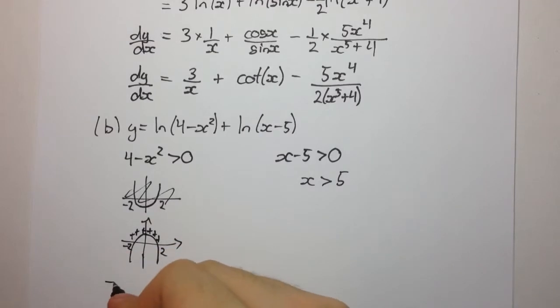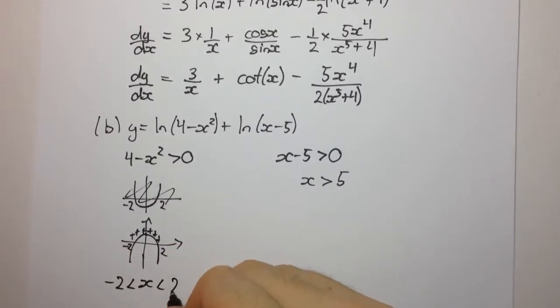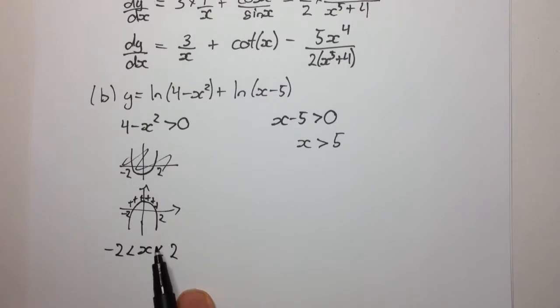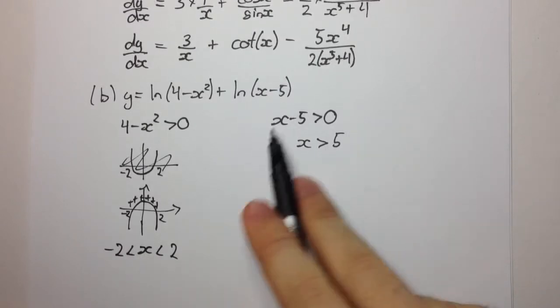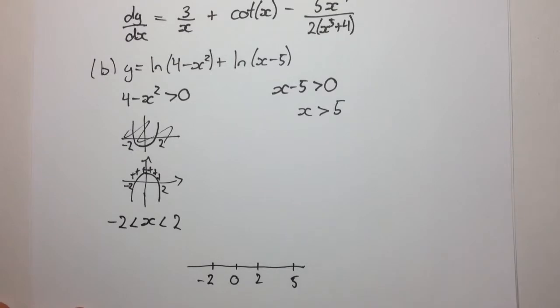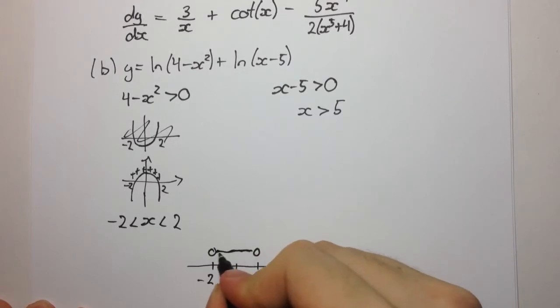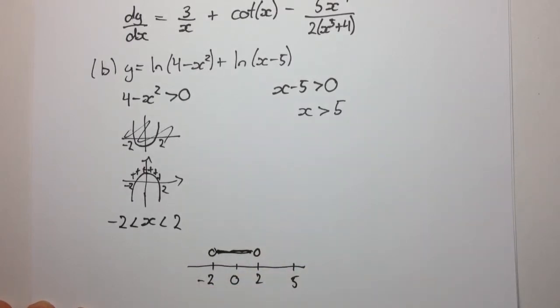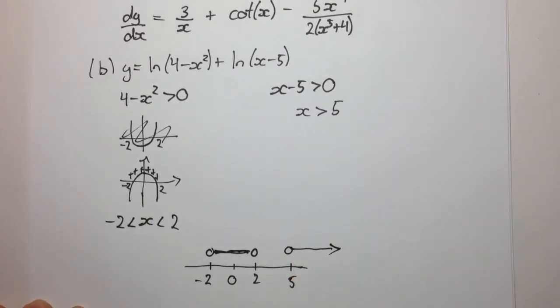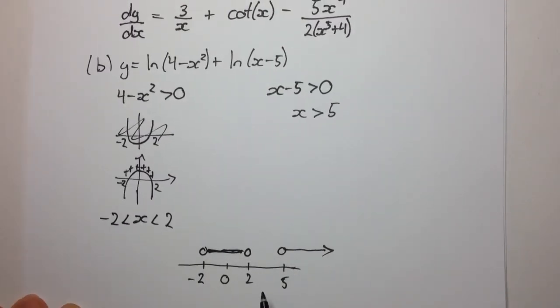So the solution here is going to be minus 2 is less than x, which is less than 2. Okay, so let's try and find the domain of this function. So the domain must be all values of x which satisfy these two conditions. So when we draw our number line, let's say that this is 0, this is 2 here, this is 5, and this is minus 2. What do we have from here? We have all the numbers lying in that region, or that interval. But from here, we have all the numbers that are lying in this region.